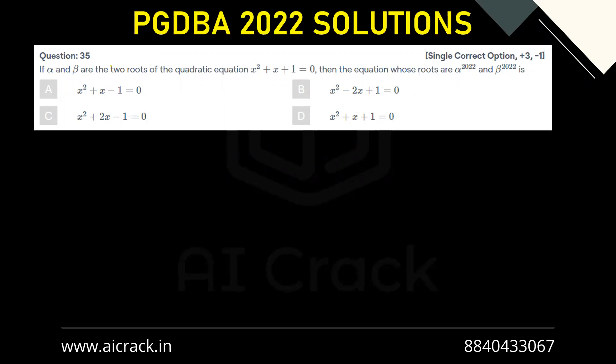Hi everyone, let's solve question number 35. If alpha and beta are the two roots of the quadratic equation x^2 + x + 1 = 0, then find the equation whose roots are alpha raised to power 2022 and beta raised to power 2022. We've been given this equation x^2 + x + 1 = 0.